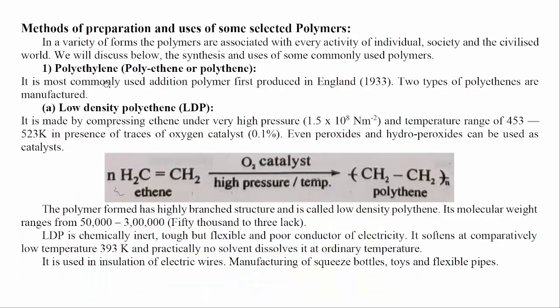1. Polyethylene, polyethene or polythene. It is the most commonly used addition polymer, first produced in England in 1933. Two types of polyethenes are manufactured.